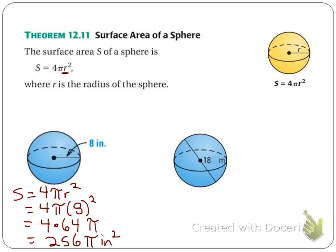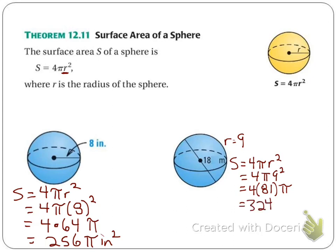For our second example, 18 is not the radius — it is the diameter, so our radius is actually 9, half of that. The surface area is 4πr², which is 4π times 9 squared, giving 4 times 81π. And 4 times 81 is 324, so our answer is 324π meters squared. That's our surface area.